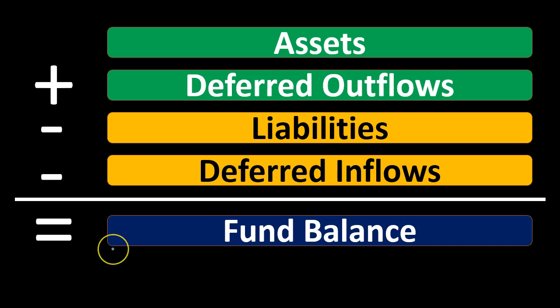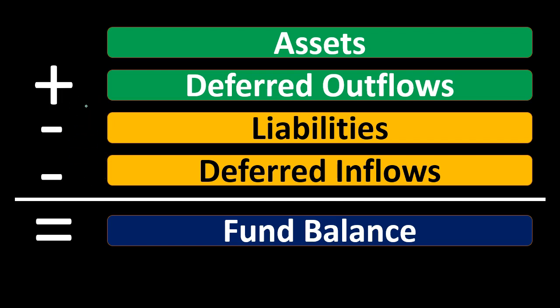It's important to know these terms: net assets, equity, and fund balance are all conceptually the same — it just depends on the type of entity. For-profit sole proprietors use owner's equity, partnerships use partnership equity, corporations use shareholders' equity. Other entities may use net position or fund balance. They all refer to assets minus liabilities equals that net position, fund balance, or equity section. Deferred outflows and deferred inflows act like assets and liabilities respectively but don't technically fall into those classes, so they are broken out into their own sections in the balance sheet and accounting equation.